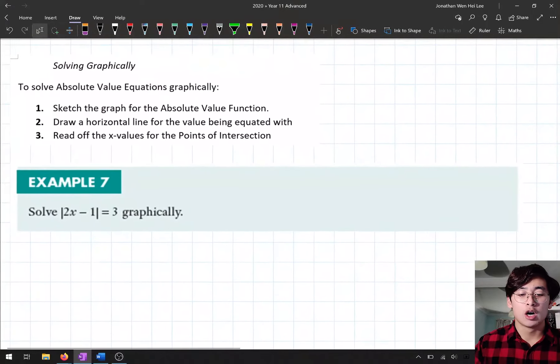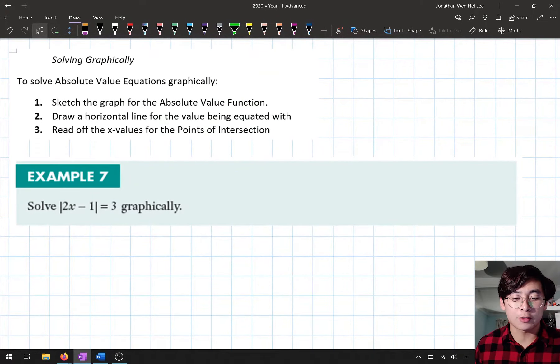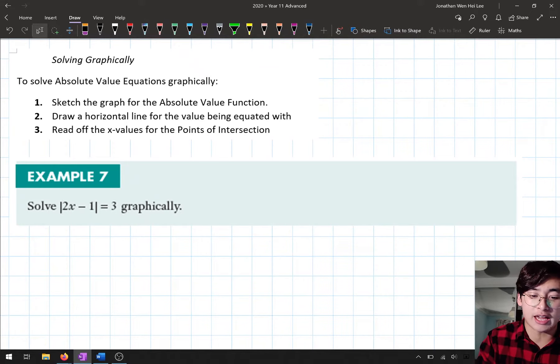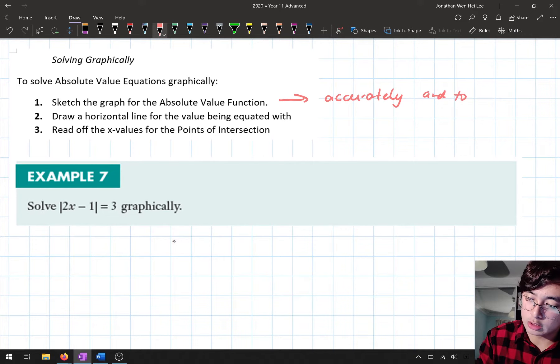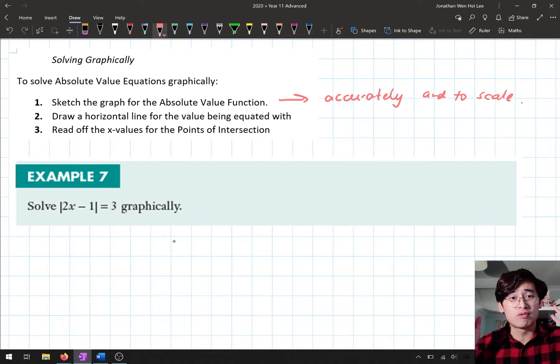So when you solve graphically, what you need to do is sketch the absolute value function, and I would recommend you sketch it accurately and to scale. The reason being is because you want to read off the x coordinates really easily, so you can be absolutely sure where your solution is going to be.